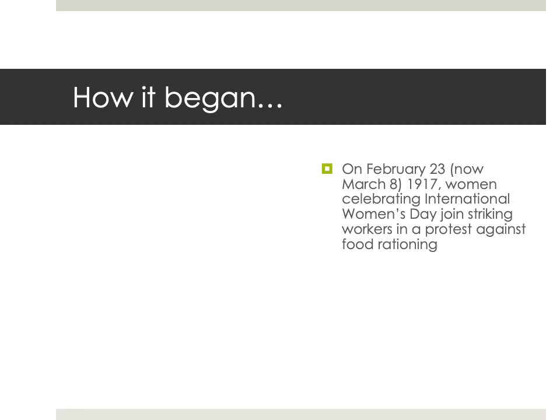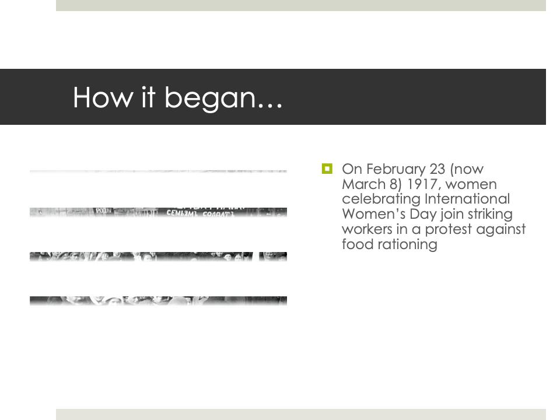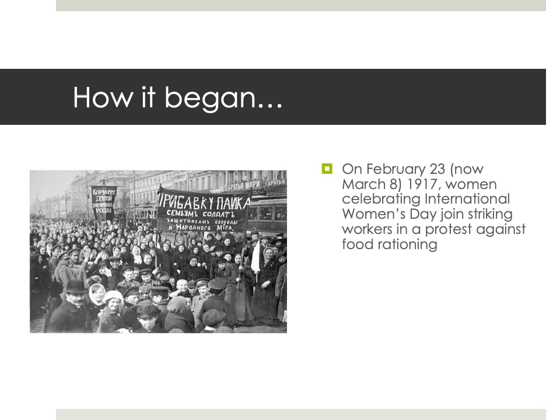On February 23rd, which is now March 8th — they were using the old-style calendar at the time, which is why the dates and months are a little mixed up. On February 23rd, old-style, 1917, there was a large number of women in the streets of St. Petersburg celebrating International Women's Day, and they joined in on an ongoing strike that was in protest against food rationing happening as a result of World War I. The price of food had skyrocketed and there was significant scarcity in food and fuel. Here's a picture of some of those striking workers and the women who had joined them.